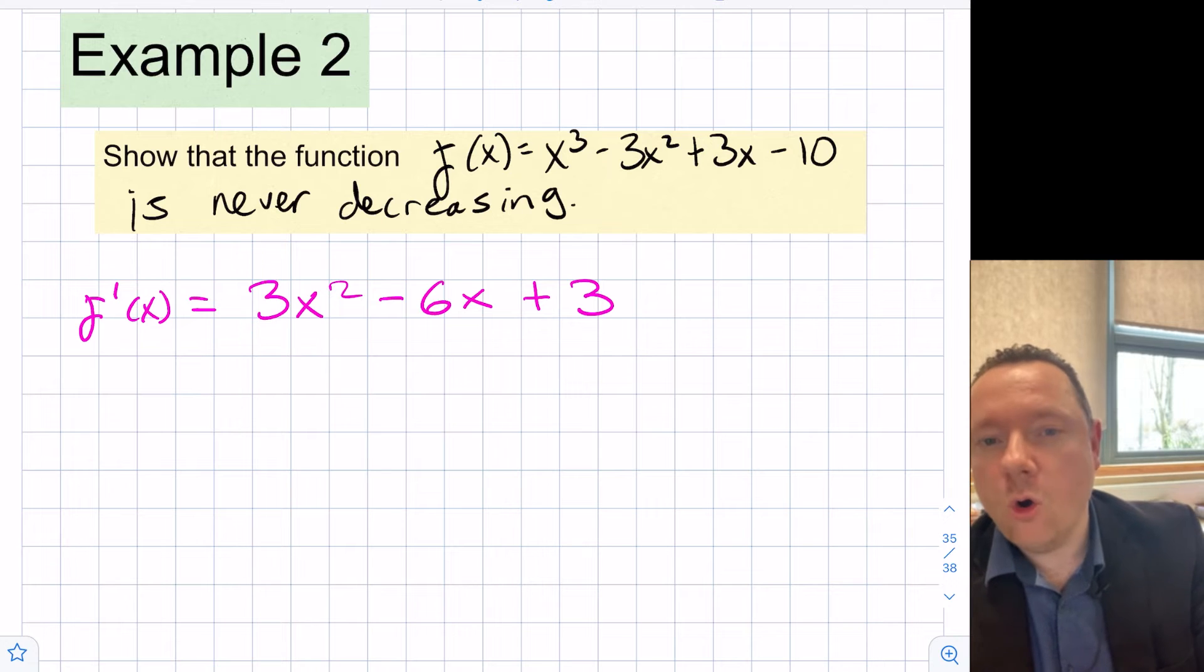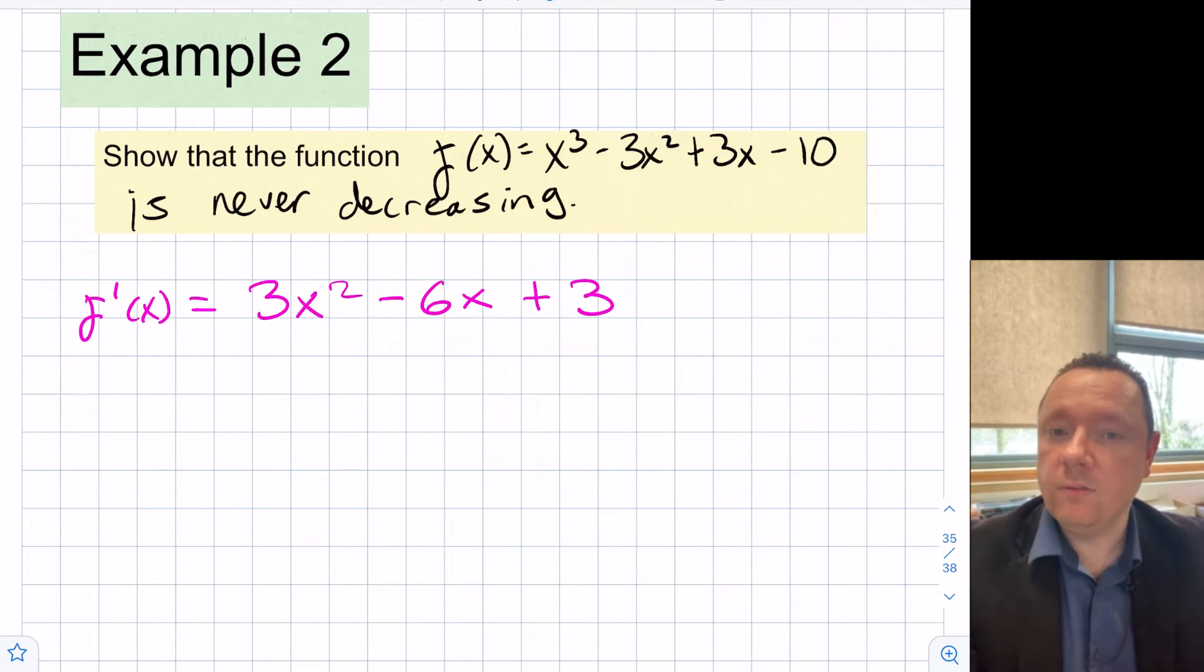So f dash x equals 3x squared minus 6x plus 3, and we need to show that's always positive. One of the things I know is always positive is a square. If we square something, x times x is x squared, and negative things are positive. So if I can show that this is a perfect square, then I can show it's never decreasing and therefore always increasing or at least zero.